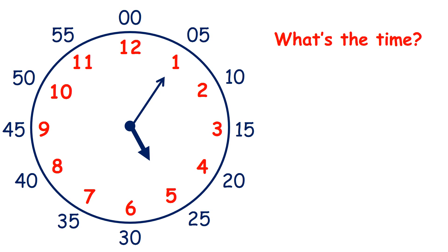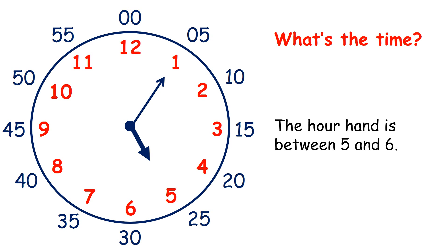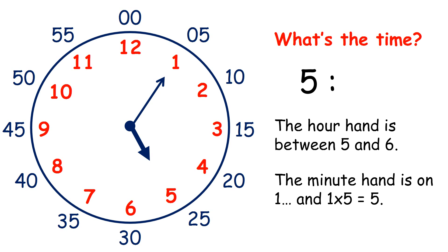Now what is the time here? The hour hand is between 5 and 6, so it's 5 something. And the minute hand is on 1, and 1 times 5 is 5, so it's 5:05. We write 05 because the number of minutes always has to be written as a two-digit number. This is also why when it's o'clock we write 00 on a digital clock — the number of minutes must always be written with two digits.